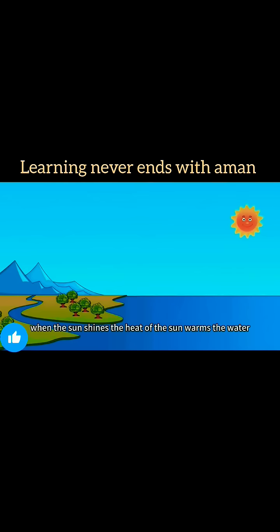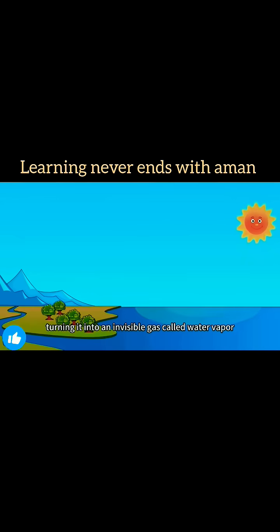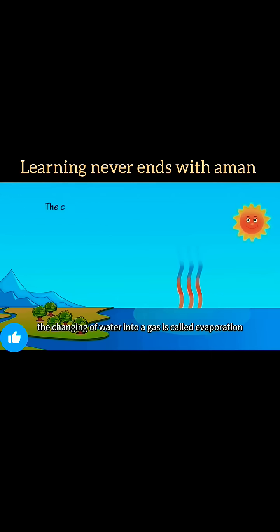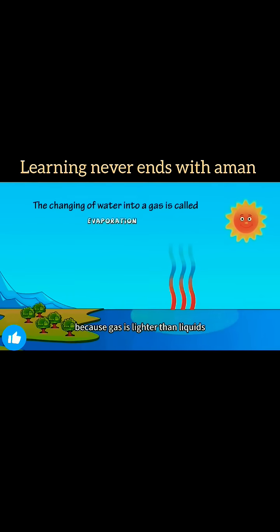Here is the Sun. When the Sun shines, the heat of the Sun warms the water, turning it into an invisible gas called water vapor. This process — the changing of water into a gas — is called evaporation.